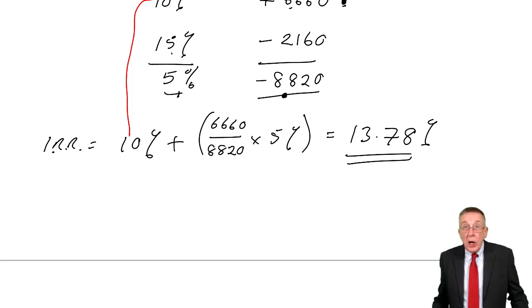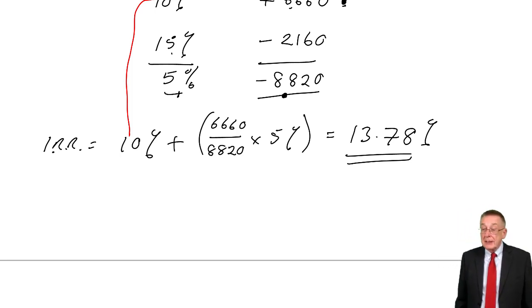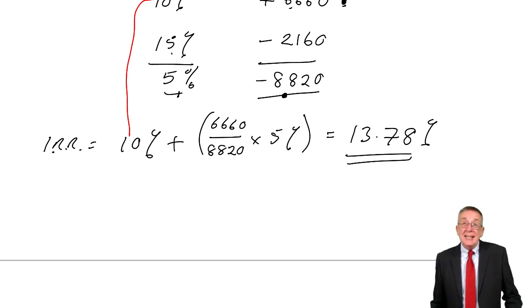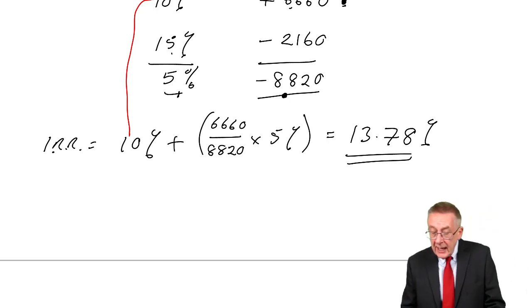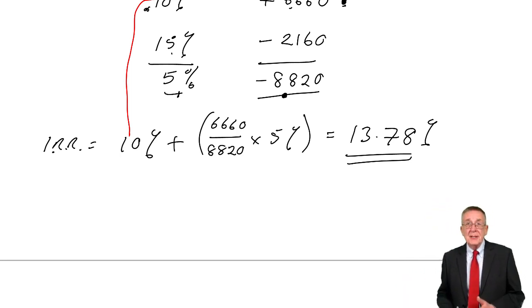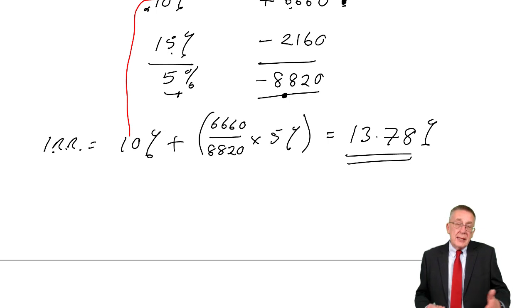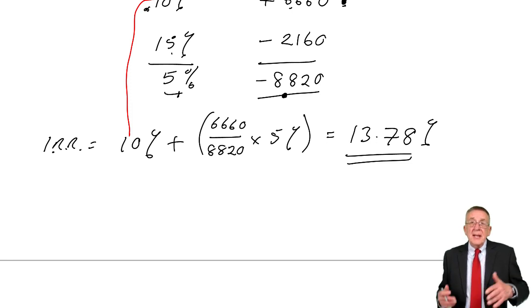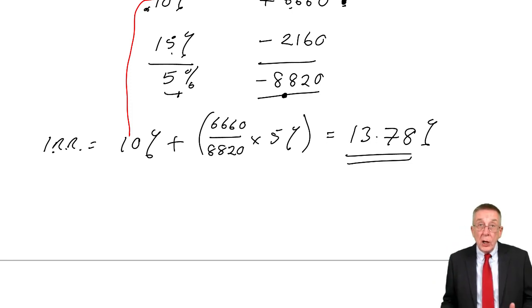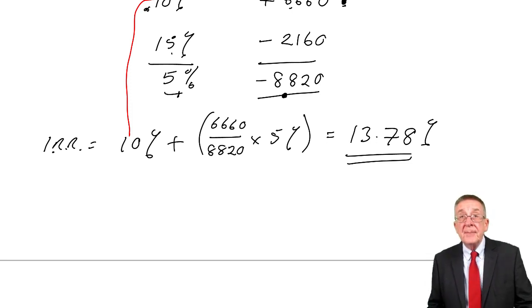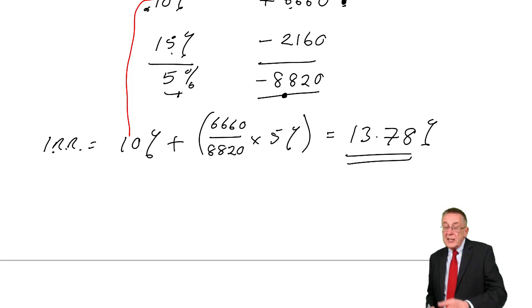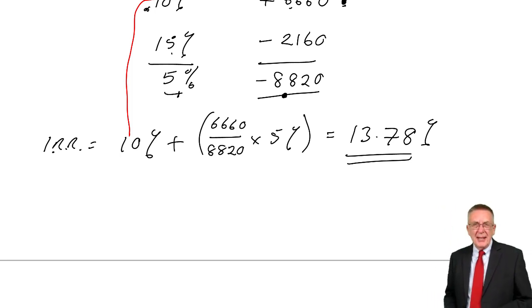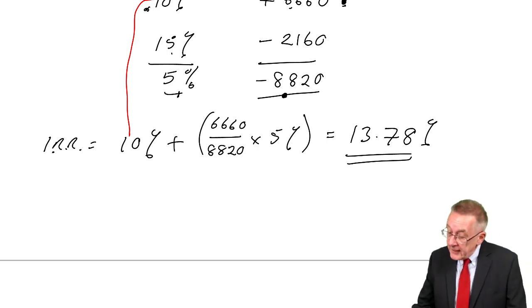In the exam, you'll almost certainly be told which guesses to use. If not, then any two sensible guesses would do. I always make 10% as my first guess. And then the second guess, depending on whether at 10% it was positive or negative, I either guess 5 or 15. But it doesn't matter. As I say, you'll probably be told in the exam which rates to use. But otherwise, just be sensible. I wouldn't do 11. I think 11 is unlikely to give the answer. But otherwise, fine. Any two will do.